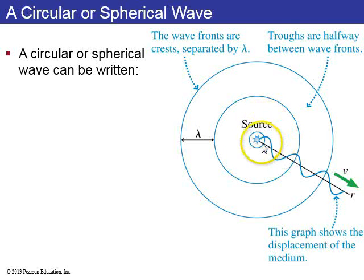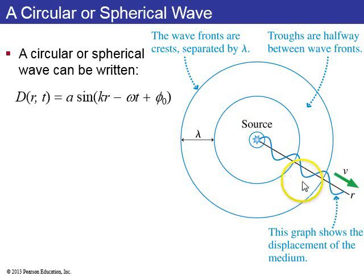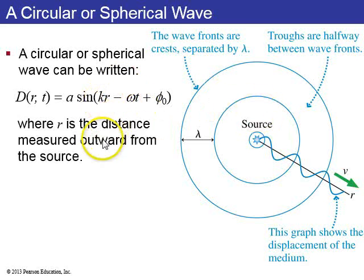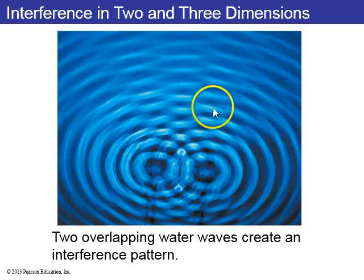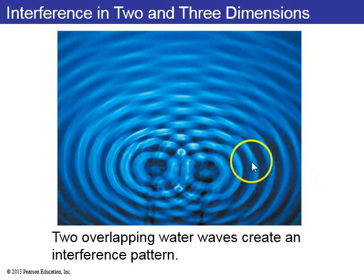Now let's look at two-dimensional waves. Here you have a source emitting some wave, and this graph shows the displacement of the medium versus distance in a particular direction. The wave fronts show where all the crests are, since this wave is emitting out in all directions r — the distance between any point and the source. The amplitude, little a, actually decreases as you get further from the source. An example of this would be ripples on the surface of water.